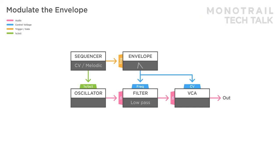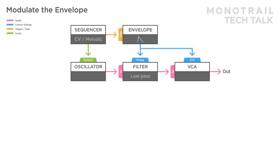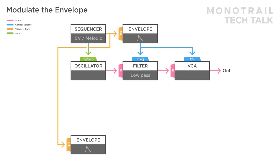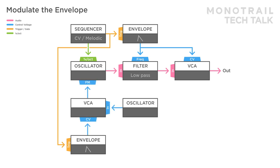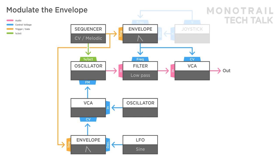Here's the basic setup with a slightly more complex expansion. A second attack decay envelope is triggered by the clock, opening a VCA and allowing an audio rate signal from a second oscillator to modulate the frequency of the main oscillator. The envelope's decay is modulated again with an LFO. You can modulate envelope stages with anything you like — for example a joystick. Here the X and Y output of the joystick are modulating the attack and decay, giving easy control over both.